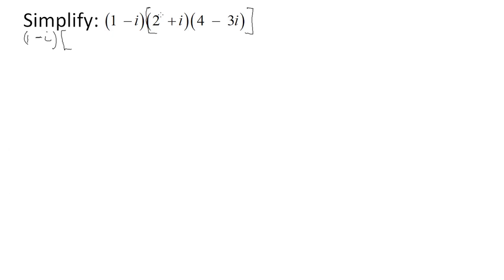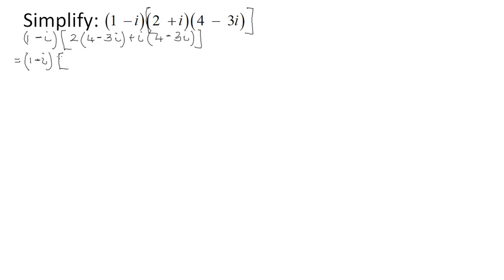I prefer the distributive law — which is exactly the same as the FOIL method. You take the real part of the first complex number and multiply it with the second complex number, then take the imaginary part of the first and multiply it with the second. This gives us the product of a monomial and a binomial.